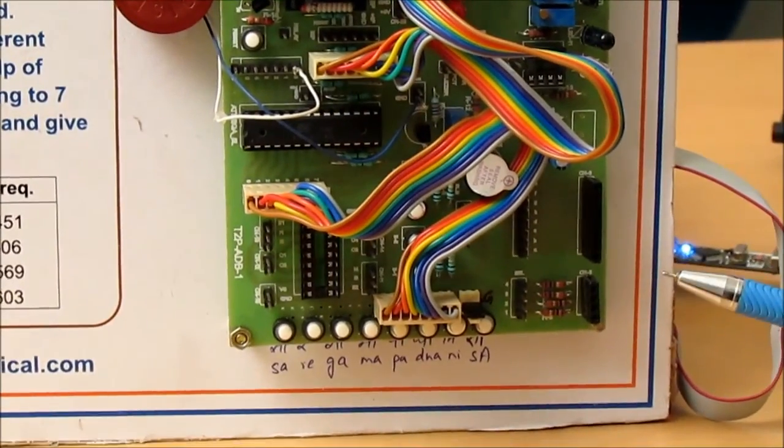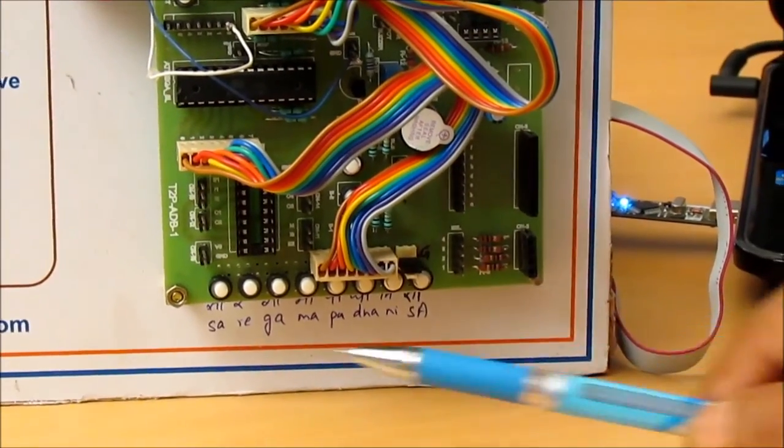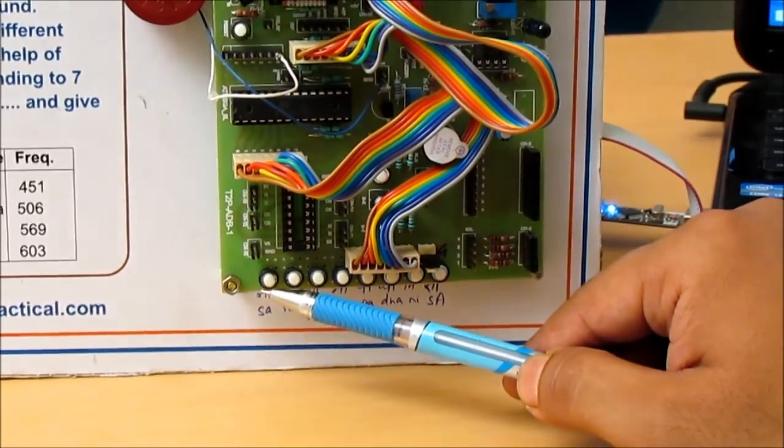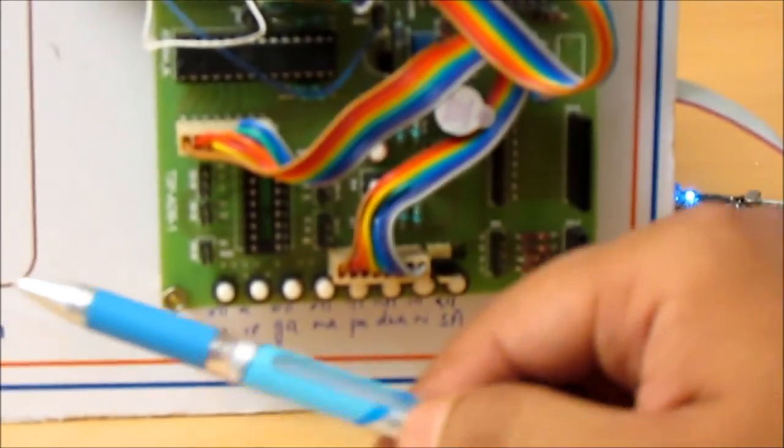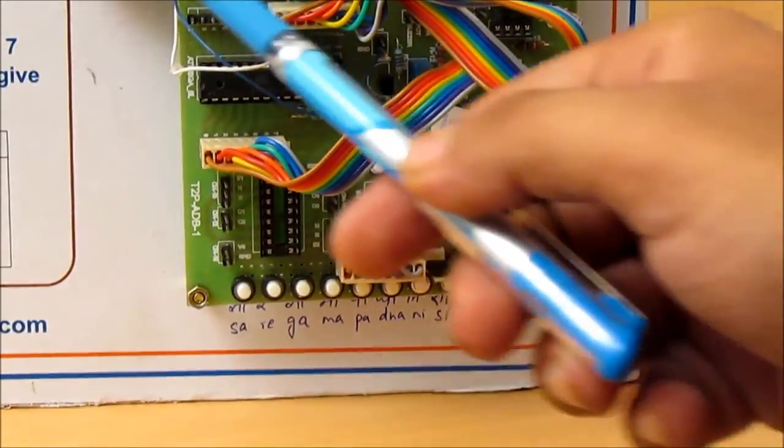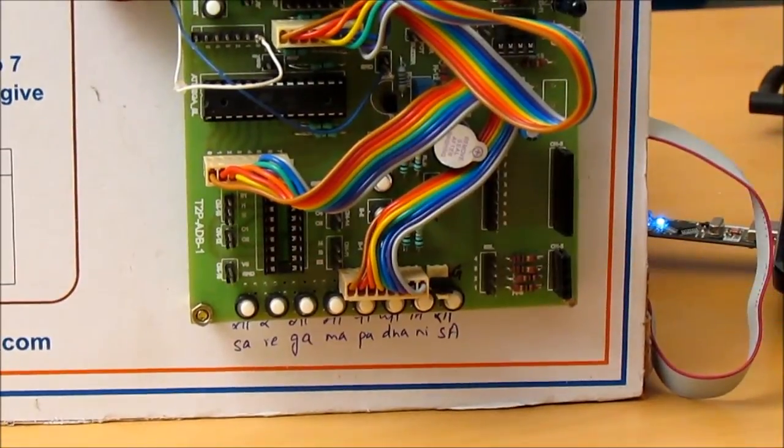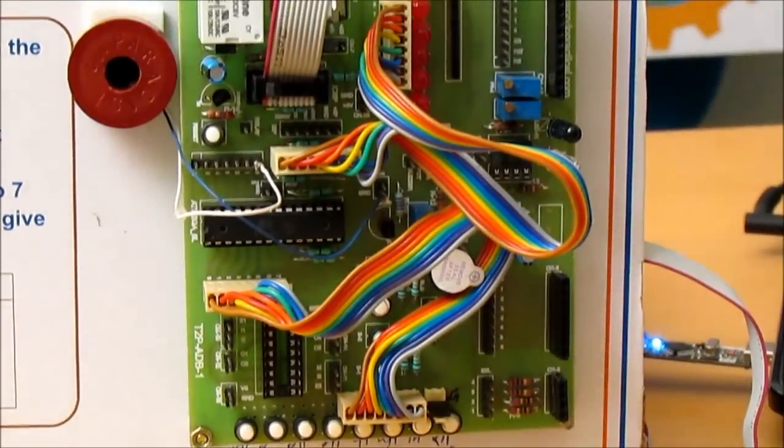So when you press the sa key, it will generate the frequency corresponding to 300 hertz and give it to this speaker, so it will produce the sound corresponding to the sa tone.